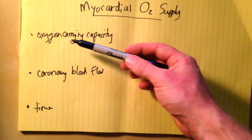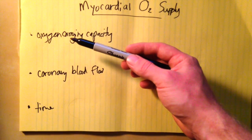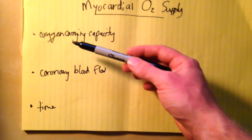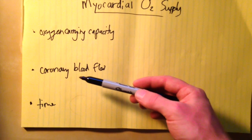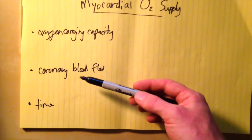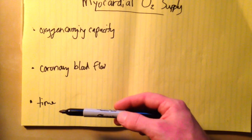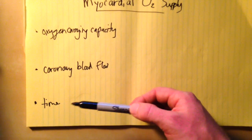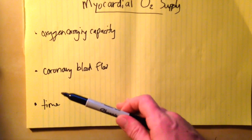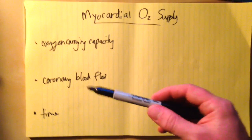Number one is how much oxygen is in the blood getting to the heart - that's our oxygen carrying capacity. Number two is how much blood is getting to the heart - the coronary blood flow. Number three is how much time does this blood have to perfuse the myocardium. There are a few things that go into each of these.